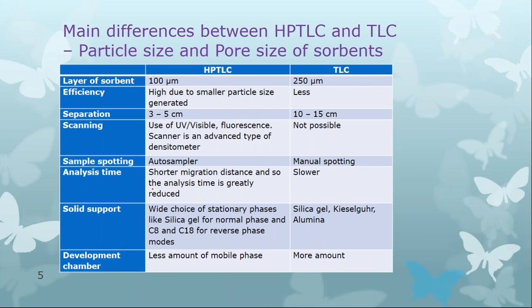Regarding the solid support, there is a wide choice of stationary phases: silica gel for normal phase and C8/C18 for reverse phase mode. In HPTLC, we can have both normal phase and reverse phase. In TLC, it is usually normal phase, because the common adsorbents — silica gel, alumina — are polar adsorbents, making it very difficult to use reverse phase in a normal TLC procedure.